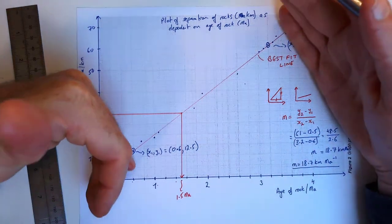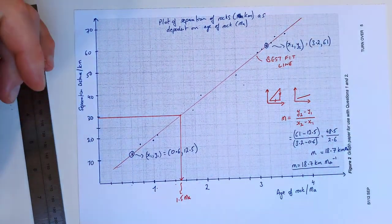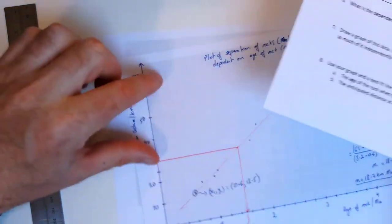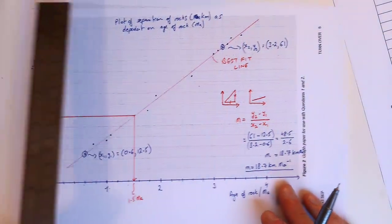Extrapolation looks outside of the data range that we have. So the second prompt here is the anticipated distance at 4 million years, so that means we have to go to the 4 value here.